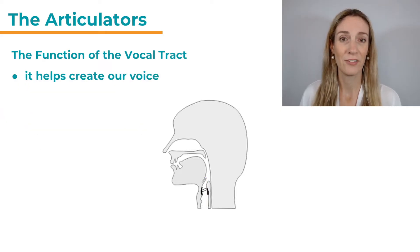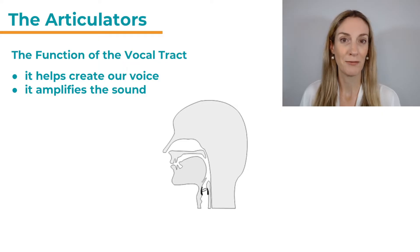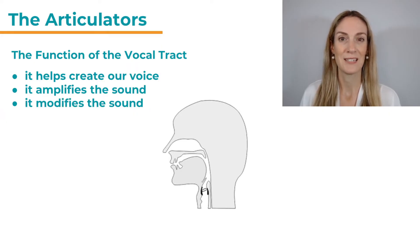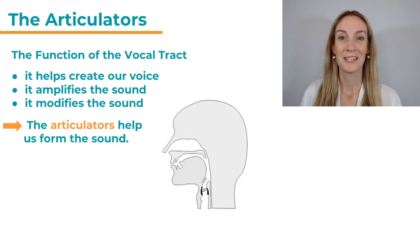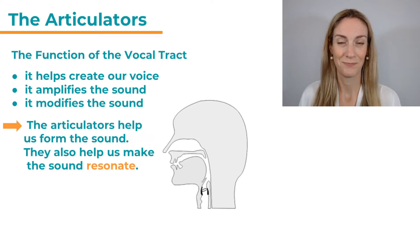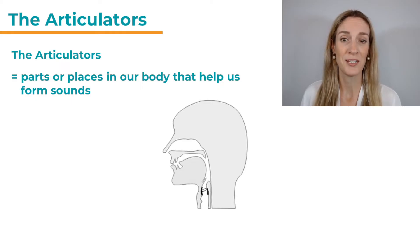Let's have a look at the function of the vocal tract. The vocal tract helps create our voice. It also makes the sound louder — we use the word amplify here, so it amplifies the sound. It also helps us form the sounds into speech, and instead of 'form' we often use the word 'modify.' So quite a lot of things are happening in the vocal tract, and the articulators play a crucial role because they help form the sound within the vocal tract. They also help make the sound resonate — that's another important word. Now let's have a look at the articulators. In general they are just parts or places in our body that help us form sounds, and most of them are located in the vocal tract.